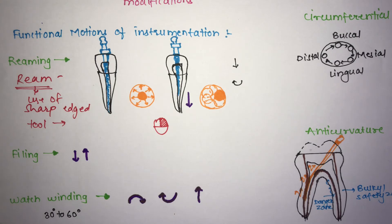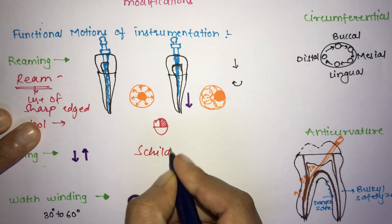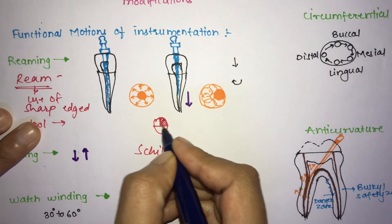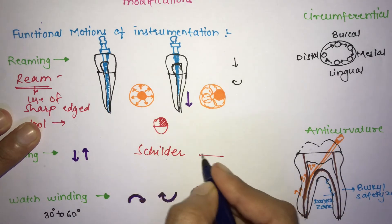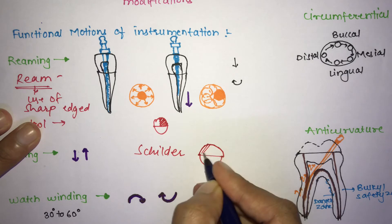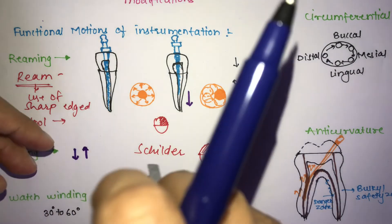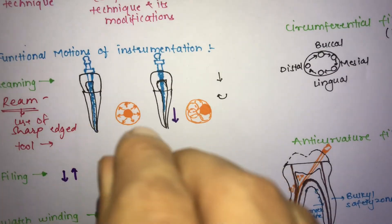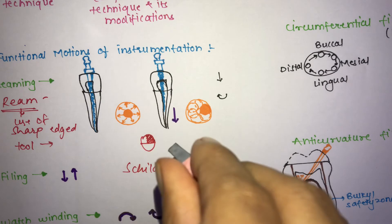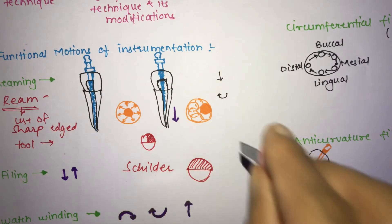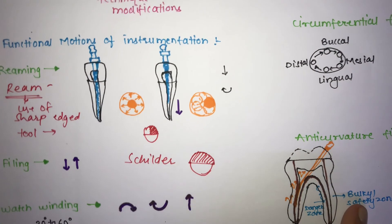The combination technique showed frequent ledge formation, perforation, and other errors. To overcome this, the technique was modified by Schilder, who changed the rotation from a quarter circle to a half circle. You rotate half a circle while directing apically, then withdraw through the walls of the canal. This is the modified combination of rimming and filing.